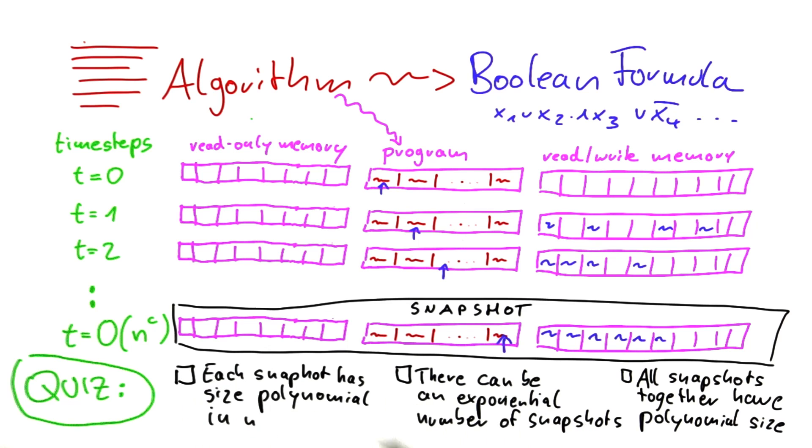So there are three statements for each of which I would like you to check this box if you think they are true and otherwise leave it blank. So the first claim you could make is that each snapshot has size polynomial in n. And n is the size of the input, as always.